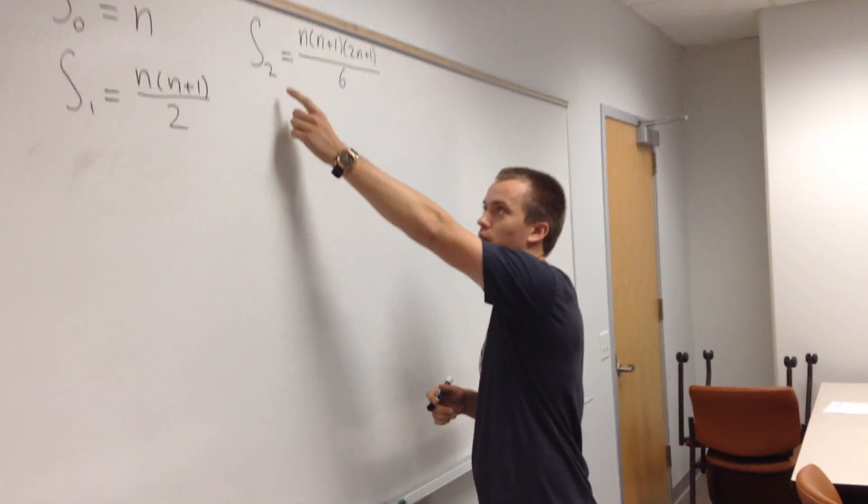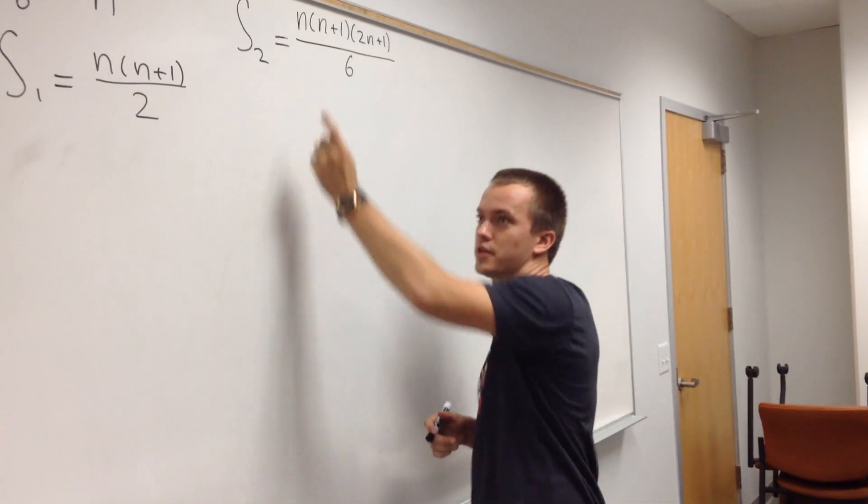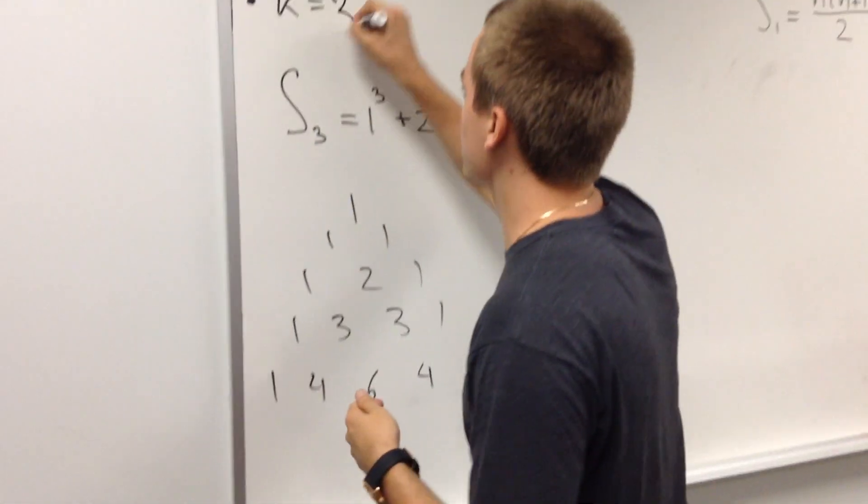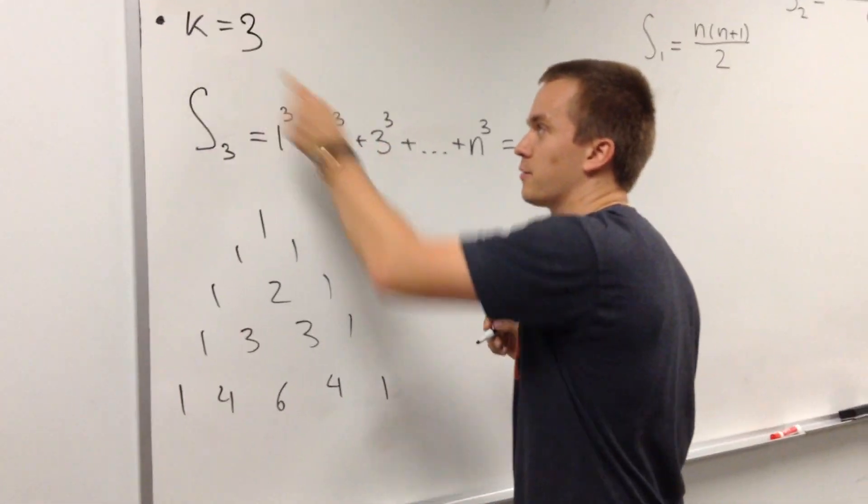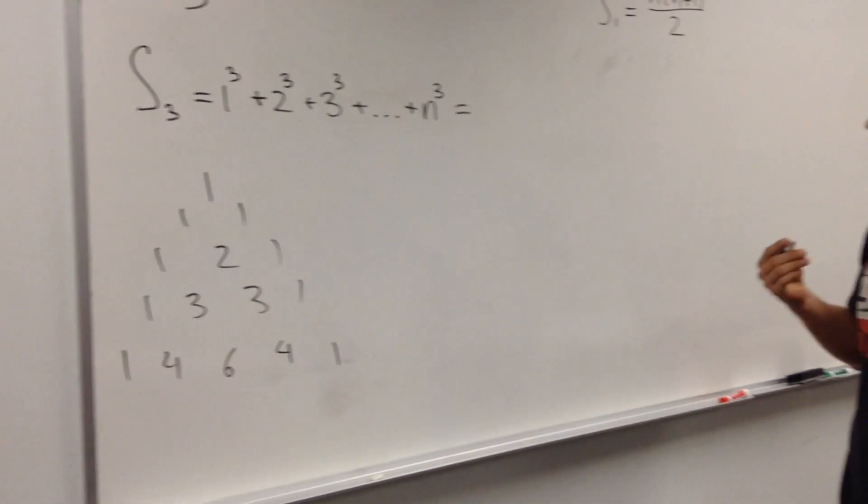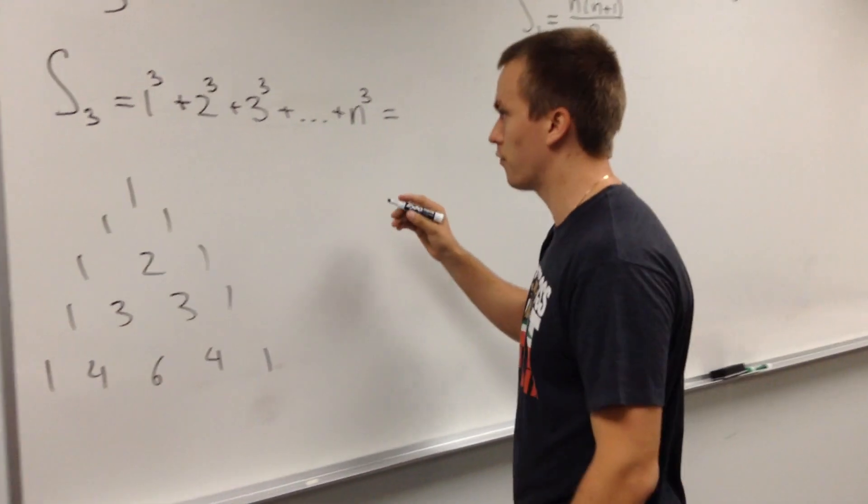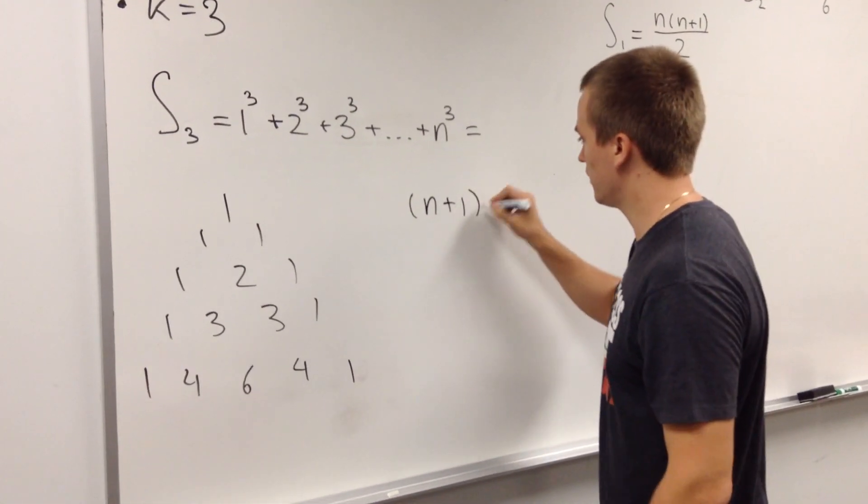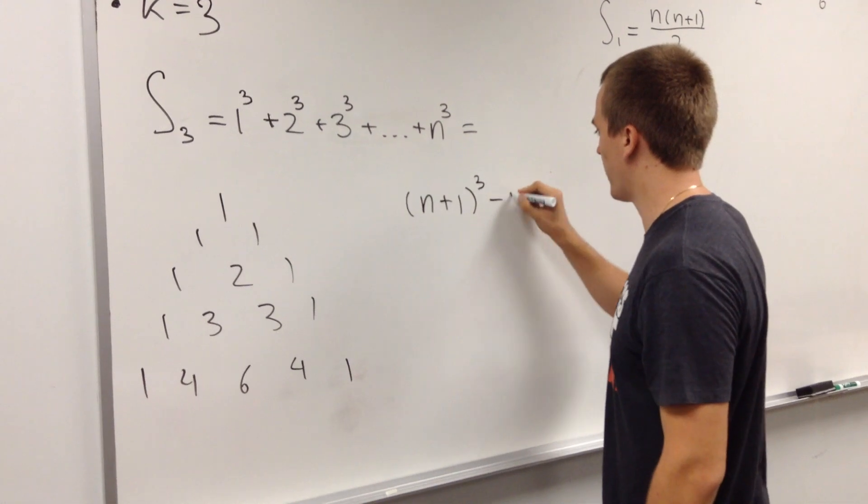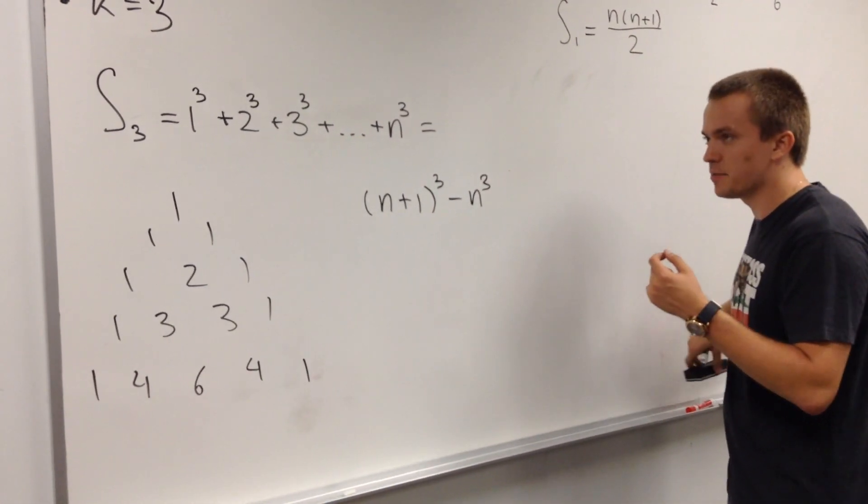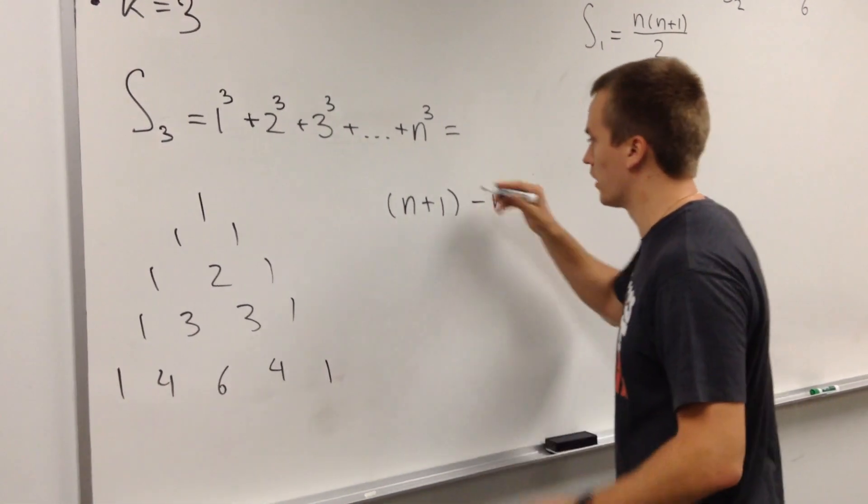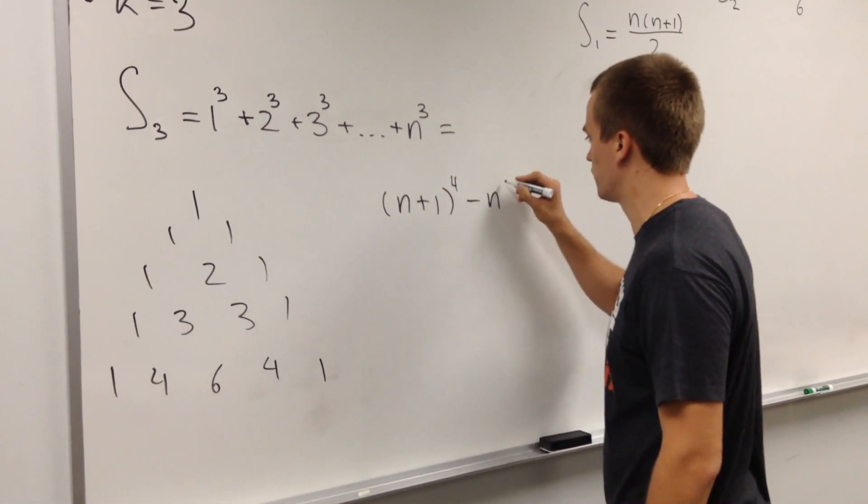And actually, you can apply these tricks for the higher k. Let's show how we can do this when k equals to 3. So what I'm going to do, you remember in the trick, I consider some formula like this. So for k equals to 2, I was using n plus 1 cube minus n cube. But in this case, because we raise our k by 1, let's also raise our power by 1. So we'll have n plus 1 to the fourth, n to the fourth.